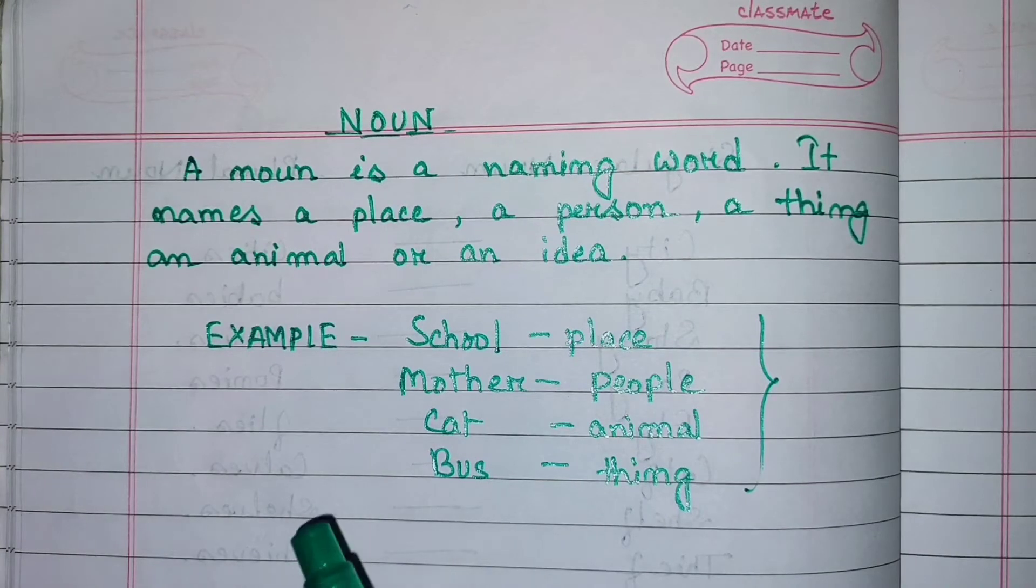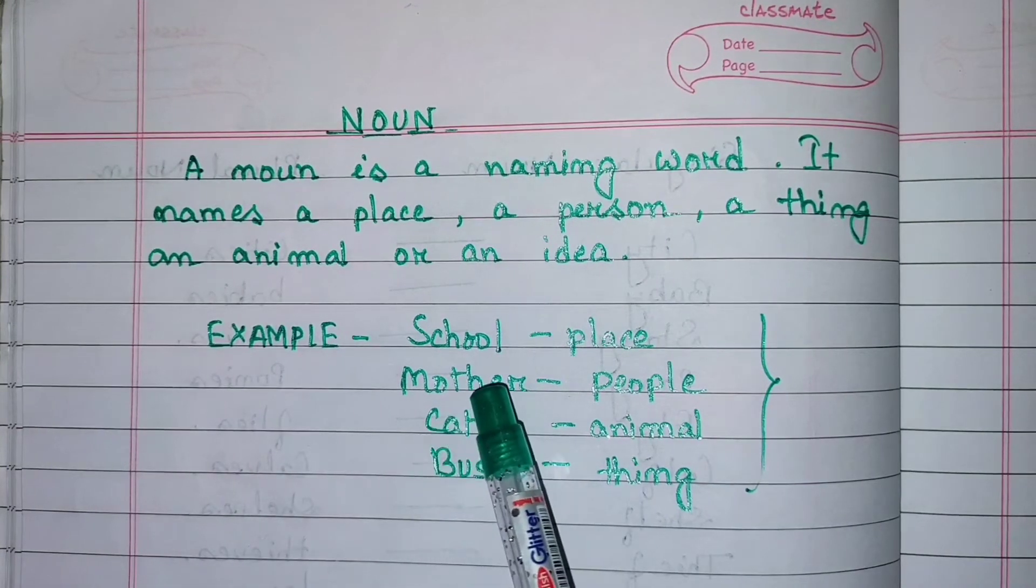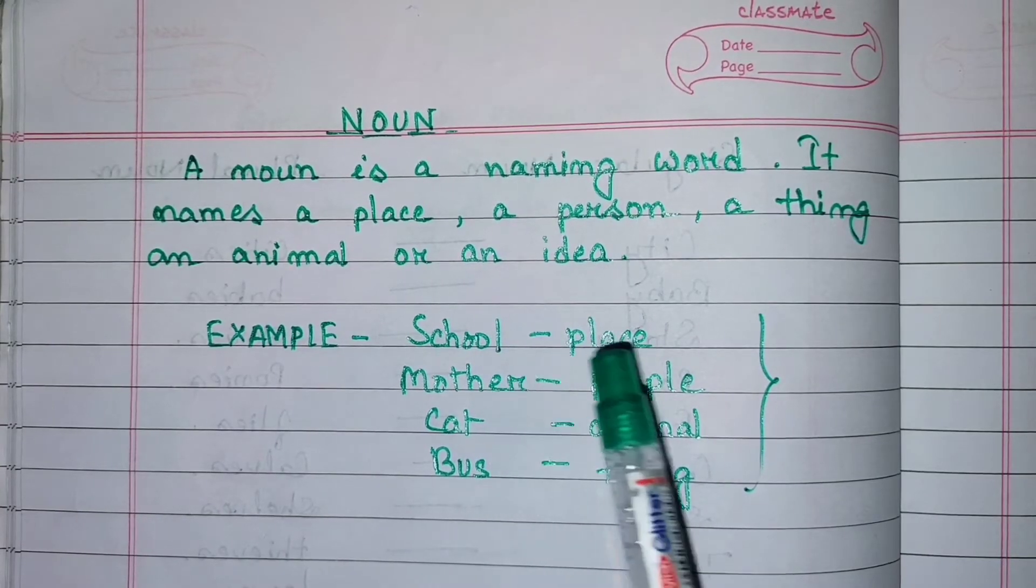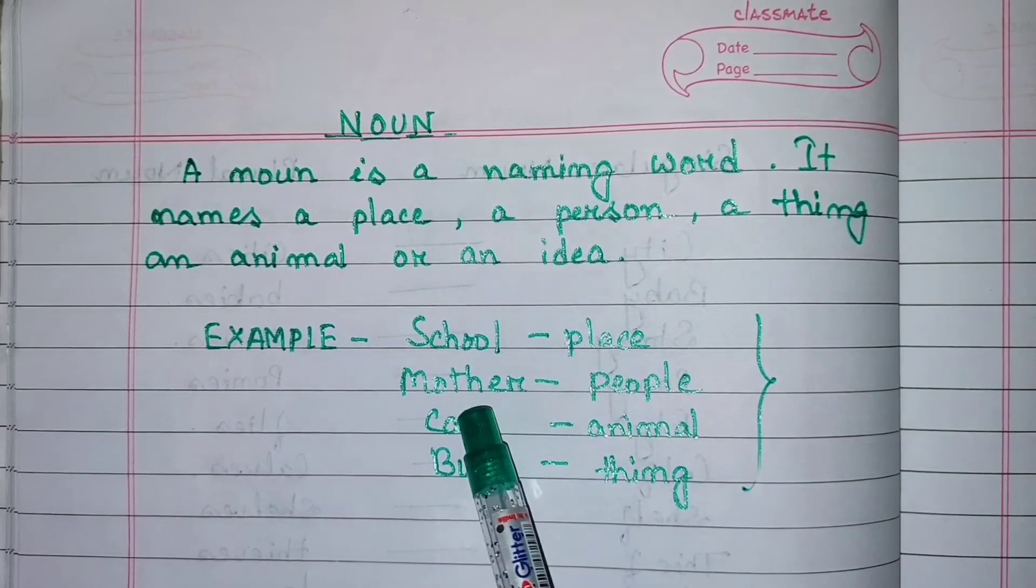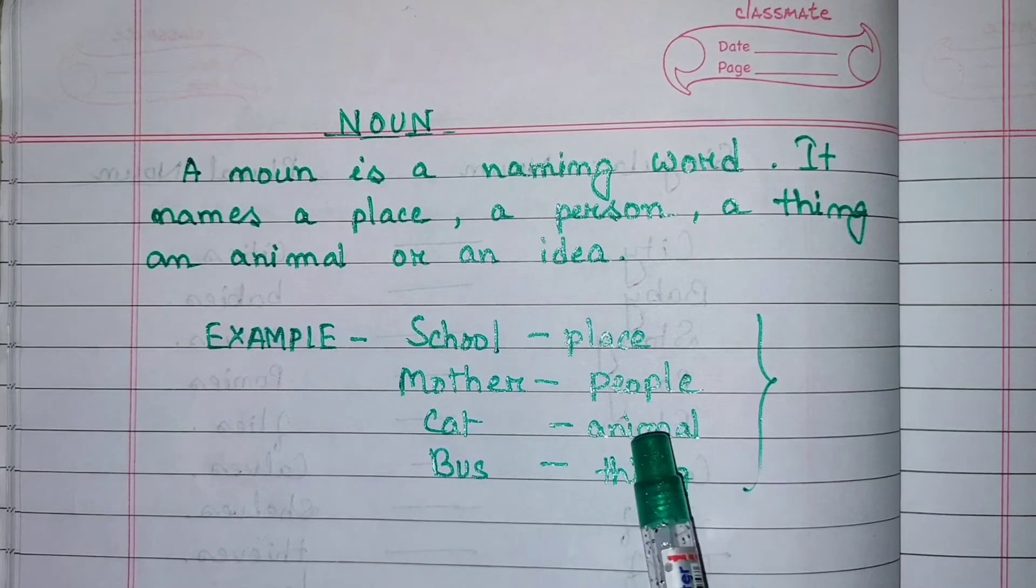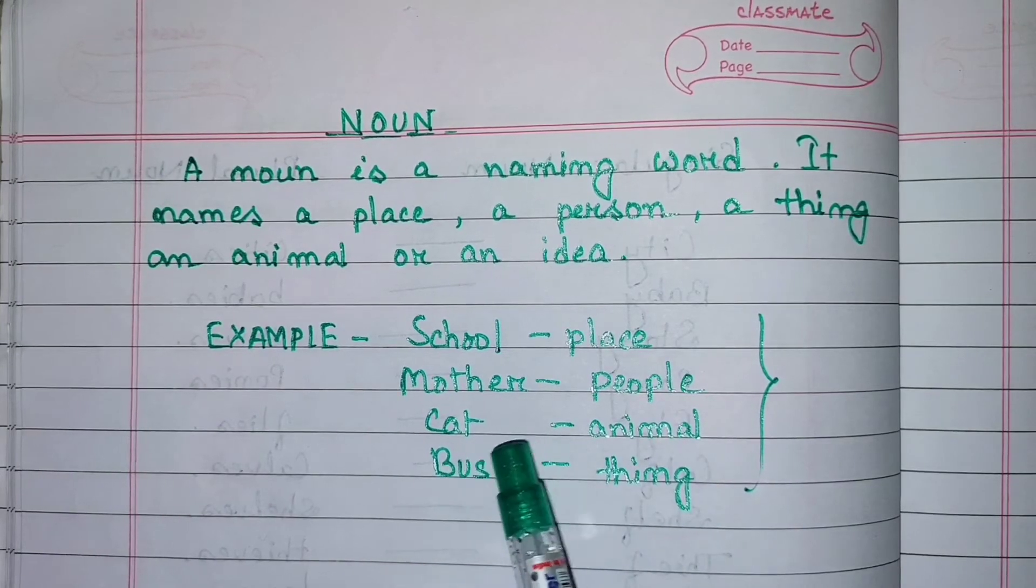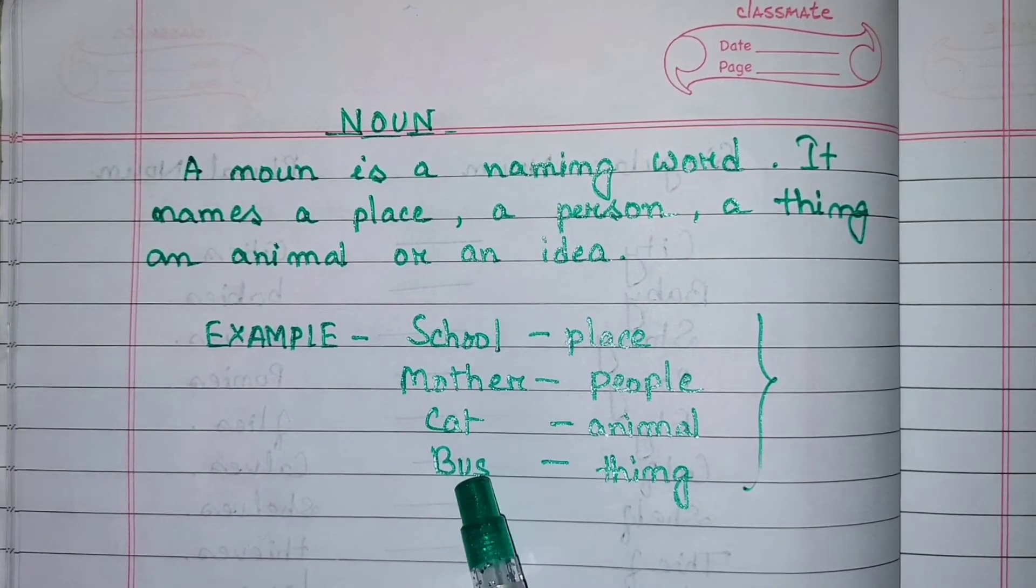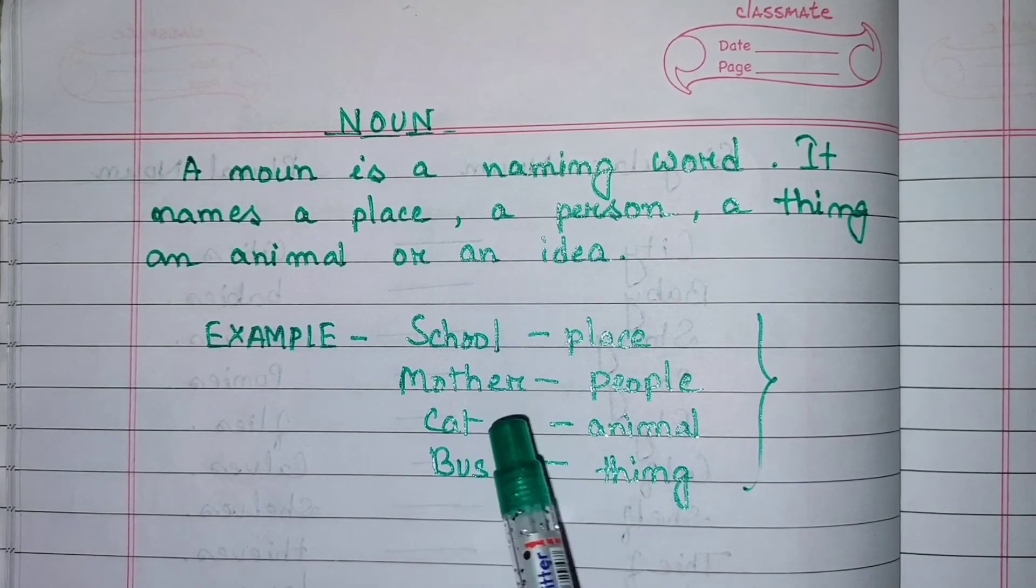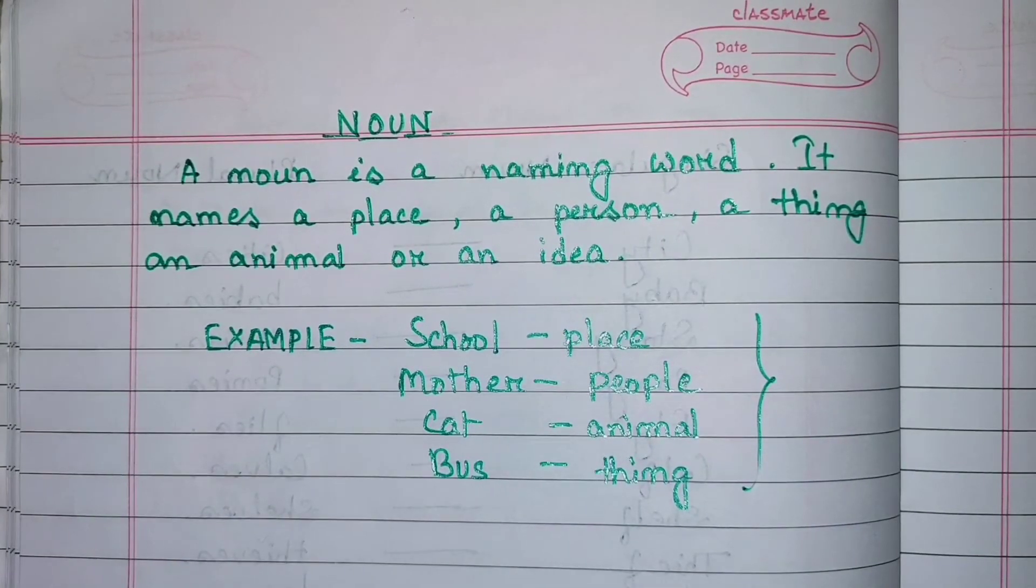So here are some examples of nouns. School - school is a place. Mother, father - those are people. Cat - animal. Bus is a thing. So school, mother, cat, bus - that's a noun.